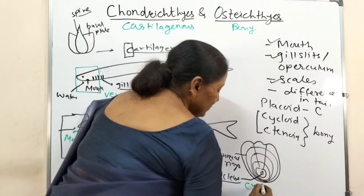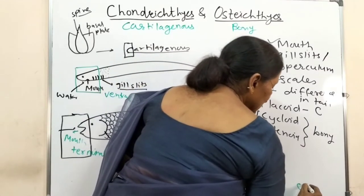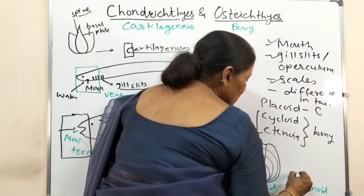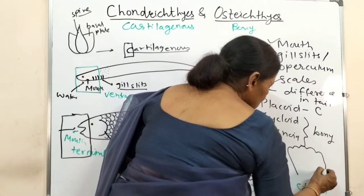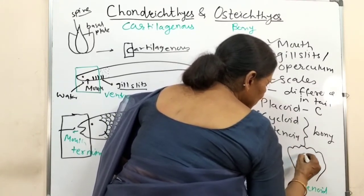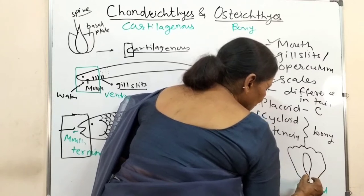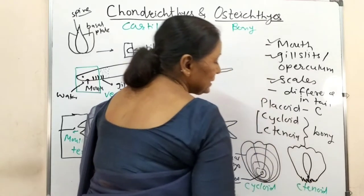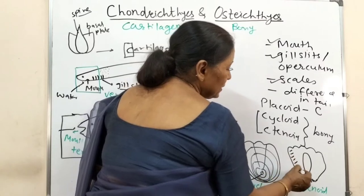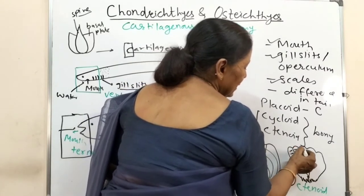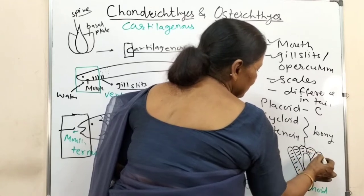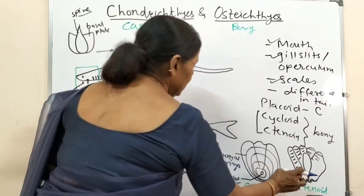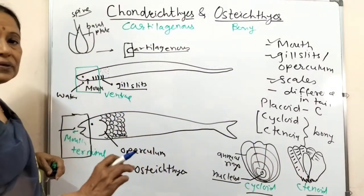The ctenoid scale is also mostly circular like the cycloid, but the difference is that it has one free serrated margin. Annual rings are also present in ctenoid scales. So cycloid and ctenoid scales are both present in bony fishes.